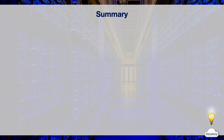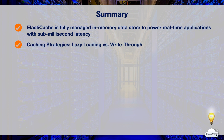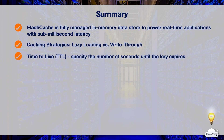In this episode, we've learned about Amazon ElastiCache for Redis and Memcached. ElastiCache is a fully managed in-memory data store designed to power real-time applications with sub-millisecond latency. ElastiCache supports two caching strategies: lazy loading and write-through. Lazy loading loads data into the cache only when necessary. Write-through updates data in the cache whenever data is written to the database. TTL specifies the number of seconds that the cache is valid until the key is expired, and helps reduce cache space and keep data up to date.